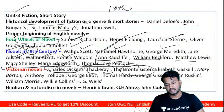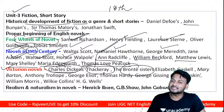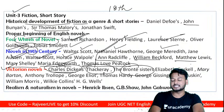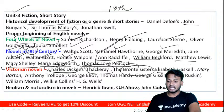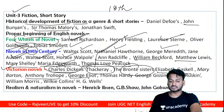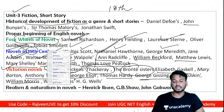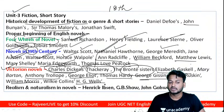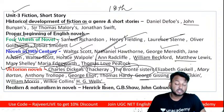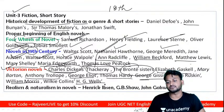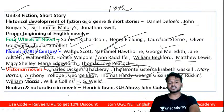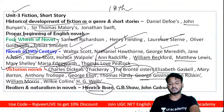Also in the Victorian period: the Brontë sisters — Emily Brontë and Charlotte Brontë — plus Elizabeth Gaskell, Anthony Trollope, George Eliot, Thomas Hardy, George Gissing, William Morris, and Wilkie Collins (Gothic). H.G. Wells is also a most important figure. Thomas Hardy depicts historical life, pessimism, realism, and naturalism.